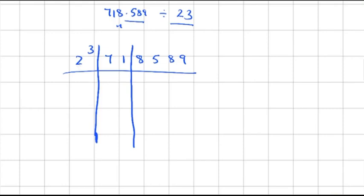Now divide using 2. First step: 2×3=6, so the quotient is 3 and the remainder is 1, since 7 minus 6 is 1. Put the quotient 3 above, and carry the remainder 1 down next to the next digit, making it 11.